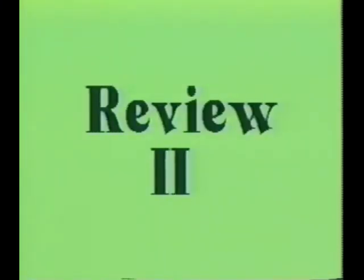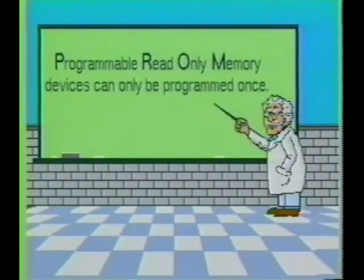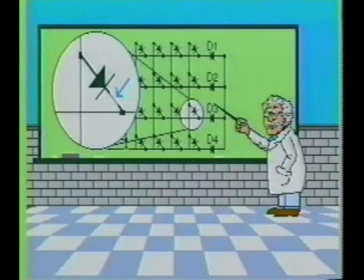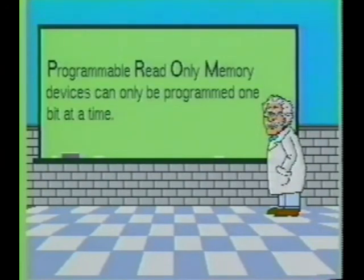We will now pause for a short review of the programmable read-only memory device. The PROM offers a tremendous advantage over the ROM in that it can be programmed by the end user. The PROM can be burned or programmed only once — once programmed, it cannot be erased. To program the PROM, a special piece of equipment called a PROM burner is used. The factory fresh PROM consists of a matrix of fusible links. An intact link produces a binary 1, whereas an open link produces a binary 0. PROMs are programmed one bit at a time.